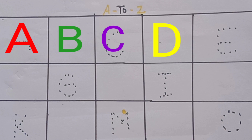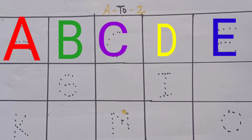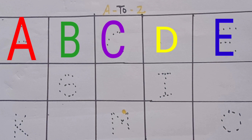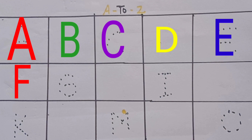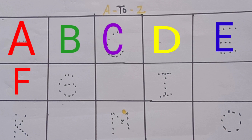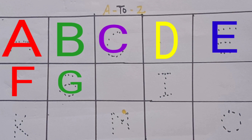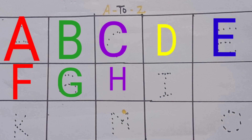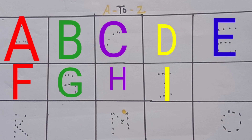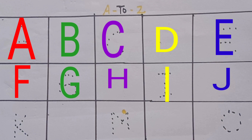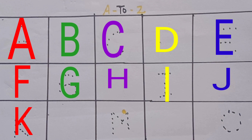A for apple. B for ball. C for cup. D for doll. E for egg. F for fish.